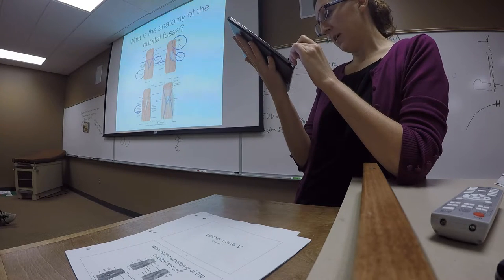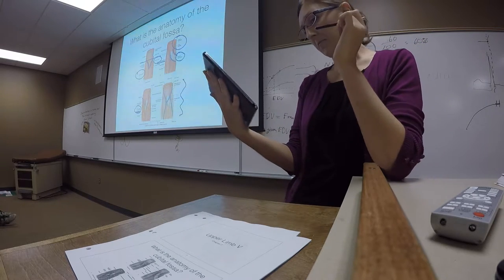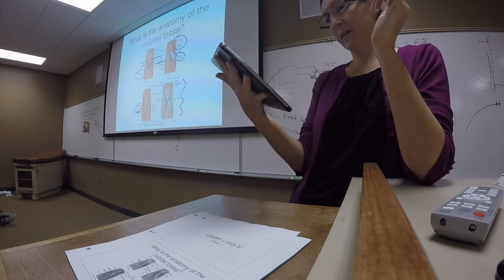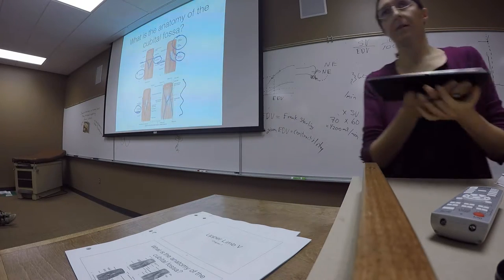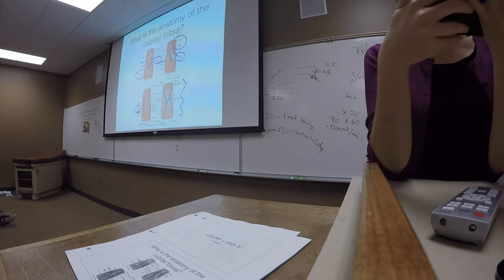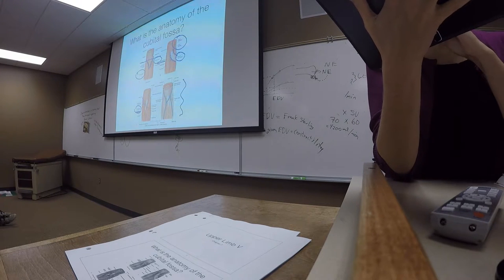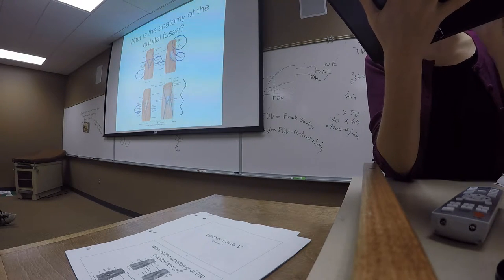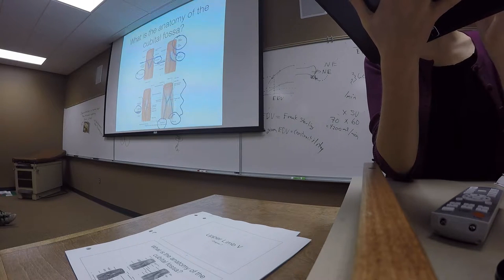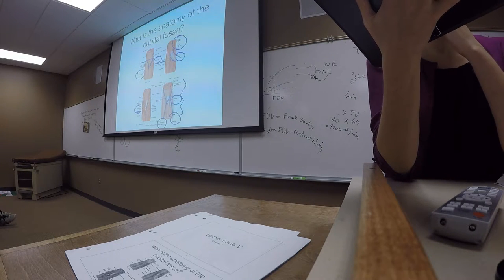We have the superficial veins which run over the top of the fascia overlying the cubital fossa. Those are the ones that phlebotomists know very well, and anybody else who's done blood draws. Remember, it's the basilic vein and the cephalic vein, and then there's the median cubital vein that runs between them.